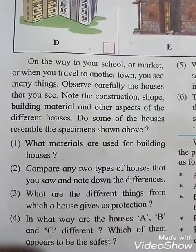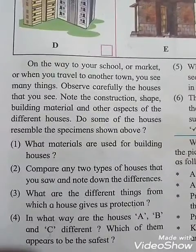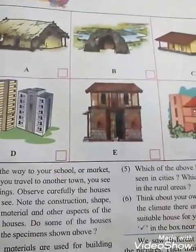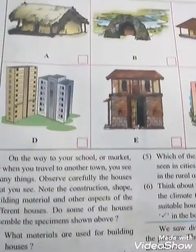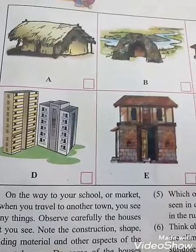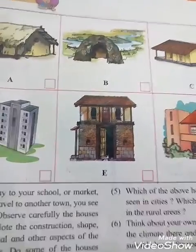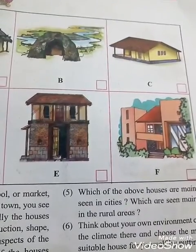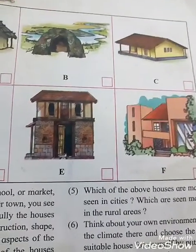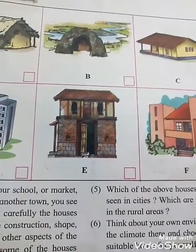The fourth question is: in what way are houses A, B, and C different, and which appears to be the safest? House A is made of clay and mud. House B is made of leaves and sticks. House C is made of cement, brick, and roof tiles. According to this, house C appears to be the safest.